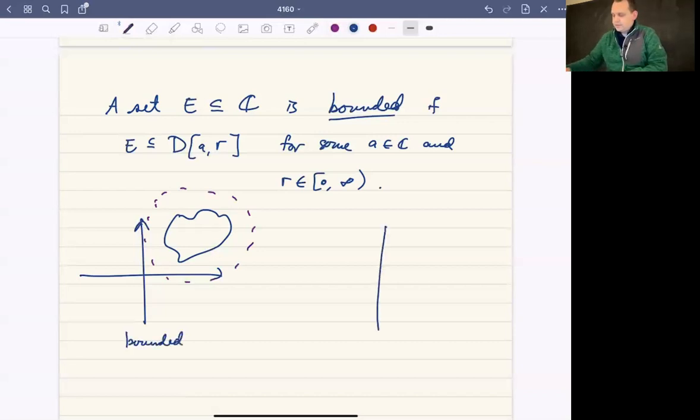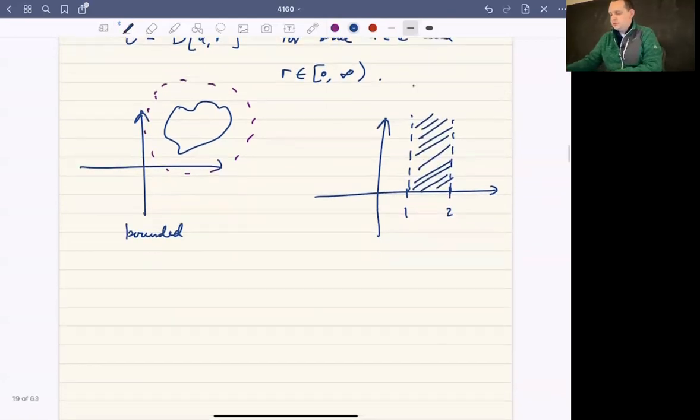If you were to talk about say the infinite strip of complex numbers where say the real part is between one and two. So this would be something like this. Maybe say that the imaginary part is on or above the x-axis. I'm just making up a set here. And then this goes on for forever.